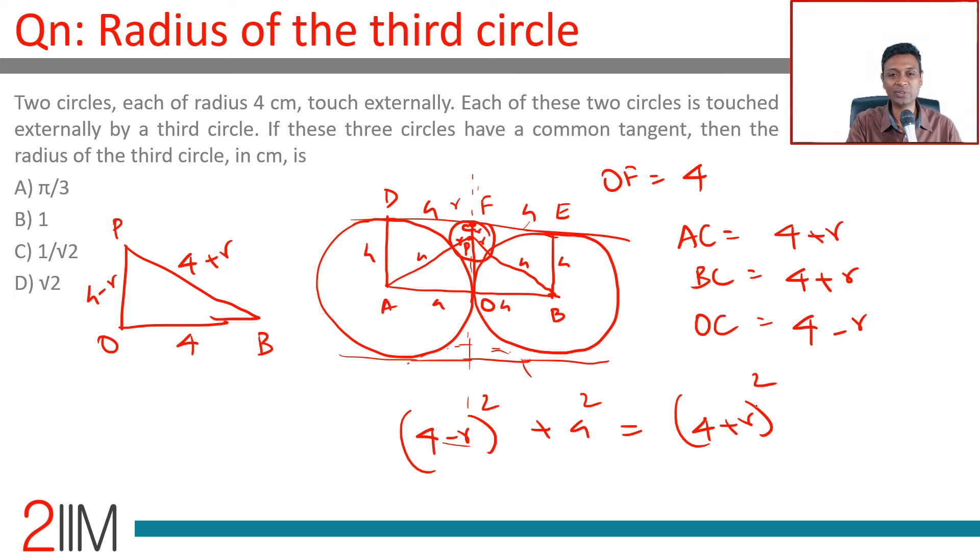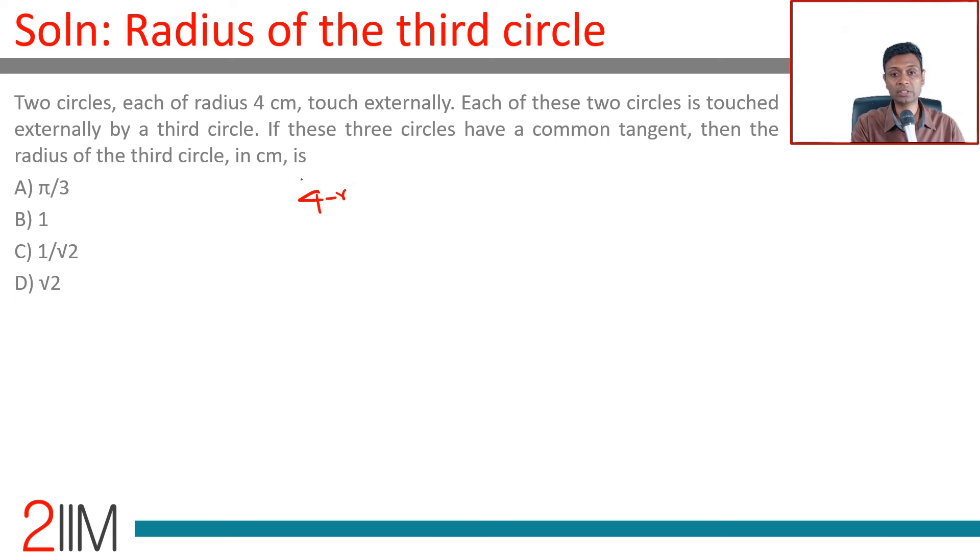Solve for this, we should get the answer. 4 minus r whole square plus 4 square equals 4 plus r whole square. 16 plus r square minus 8r plus 16 equals 16 plus r square plus 8r. 16 gets cancelled, r square gets cancelled. 16 equals 16r, or r equals 1.